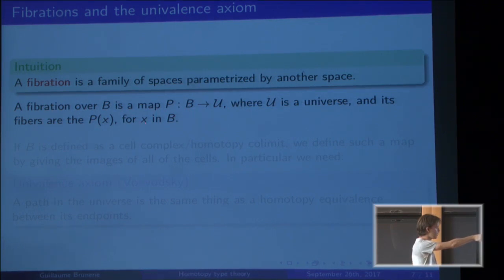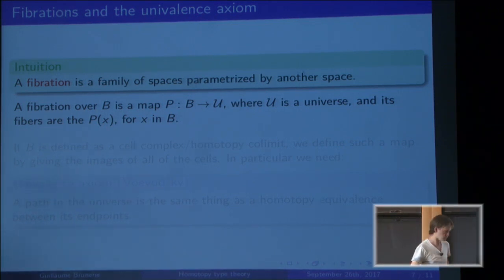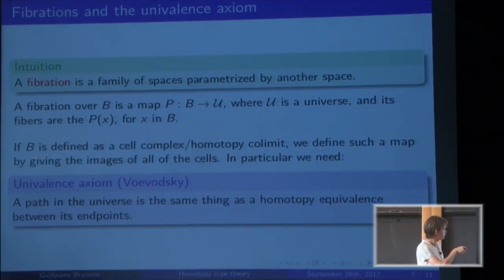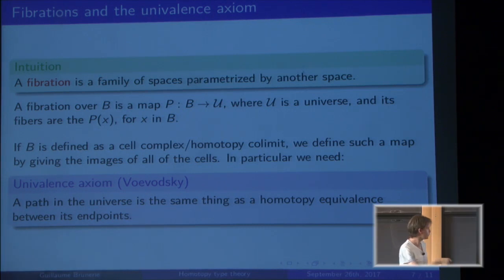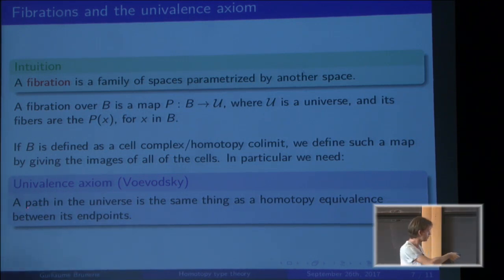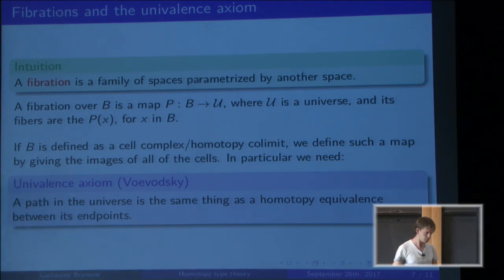Here it's very easy to talk about this definition directly because we have the universe — the space of all spaces. So a fibration over a type B is just a map from B to the universe. For any x in B, you apply this function P to x and get P(x), which is the fiber over x. This notion of fibration is well-behaved up to homotopy. To define such a map from a cell complex to the universe, we need to understand what a path in the universe is — and this is where Voevodsky's univalence axiom comes in. The univalence axiom says that a path in the universe is the same thing as a homotopy equivalence between its endpoints.